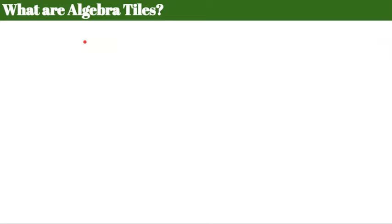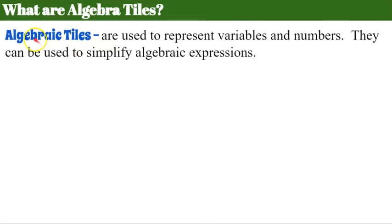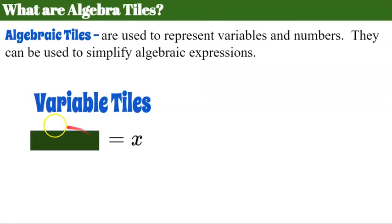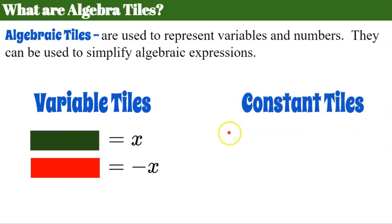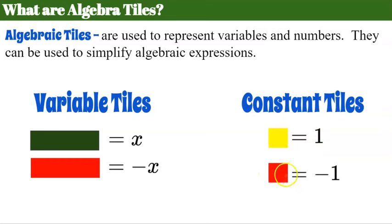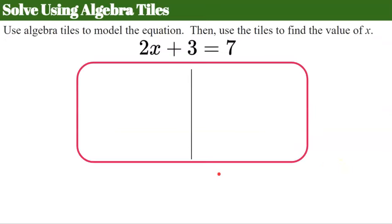Let's review what algebra tiles are. Algebra tiles are used to represent variables and numbers, and they can be used to simplify algebraic expressions. Variable tiles: the long green equals x, and the long red represents a negative x. Constant tiles: the yellow square represents the number 1, and the red square represents negative 1. Now let's try using them.